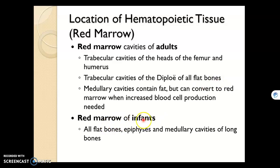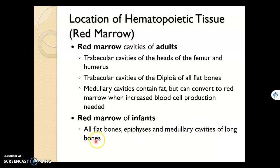In infants, there's a lot more red bone marrow. It's in all the flat bones, the diploë, the epiphyses, and the medullary cavities of long bones. So the entire interior of long bones in an infant would be red bone marrow, which is hematopoietic, or blood-producing.